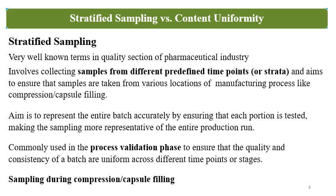For example, if your capsule filling run or compression run is going for 2 hours, 4 hours, or 8 hours, Stratified Sampling will be done at each individual location as per the predetermined time points, and the samples will be tested for assay. After getting the results, you will know that the batch has uniform content of the API throughout the process run and throughout the batch.